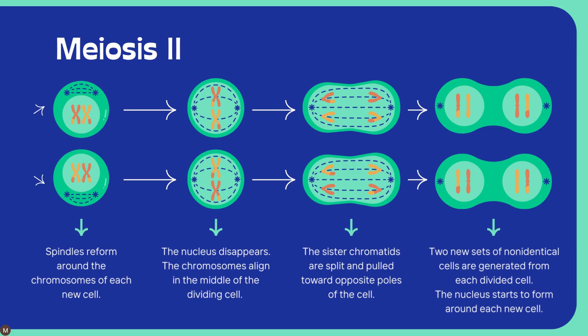Meiosis in males produces sperm cells and in females it produces egg cells. Because of independent assortment and crossing over, there is variety. For example, in males, the four sperm cells produced each time are all different from each other. They are also different from the starting cell because the starting cell had 46 chromosomes, while the ending cells have 23 chromosomes. This leads to variety — which is why two siblings with the same parents can look different.